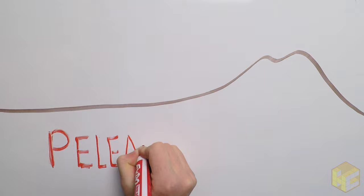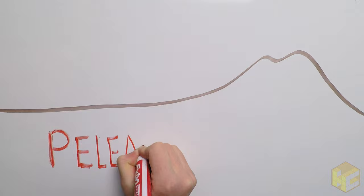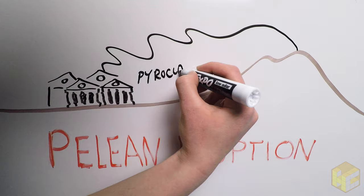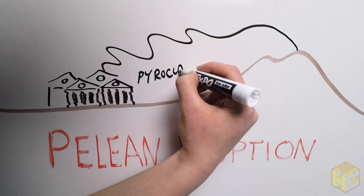This was the Peléan phase of the eruption, characterized by pyroclastic flows. These are essentially huge, blistering hot avalanches of ash, pumice, and volcanic gases. They usually flow along the flanks of the volcano, settling in lowlands.